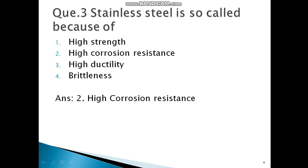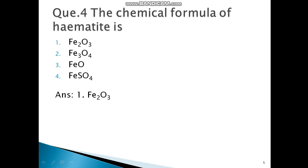Next question: Stainless steel is so called because of? High strength, high corrosion resistance, high ductility, or brittleness. See the question, stainless steel means it is corrosion resistant. So by looking at the question you can choose option 2, that is high corrosion resistance.